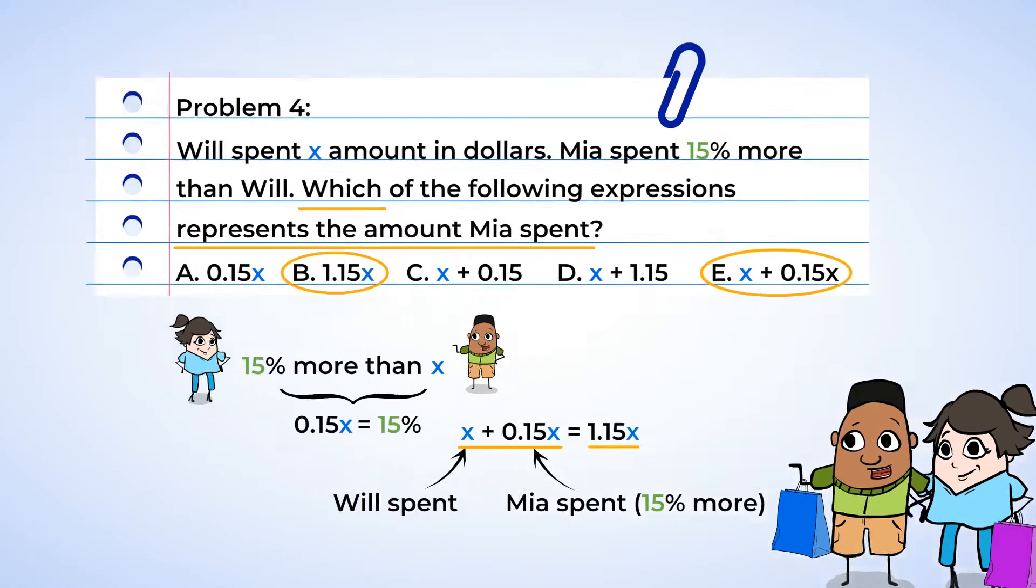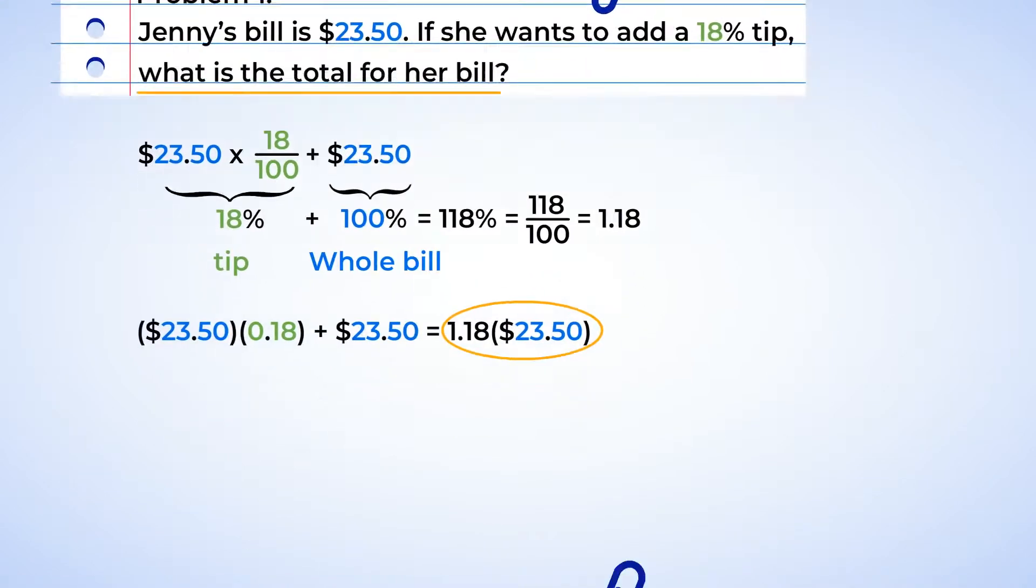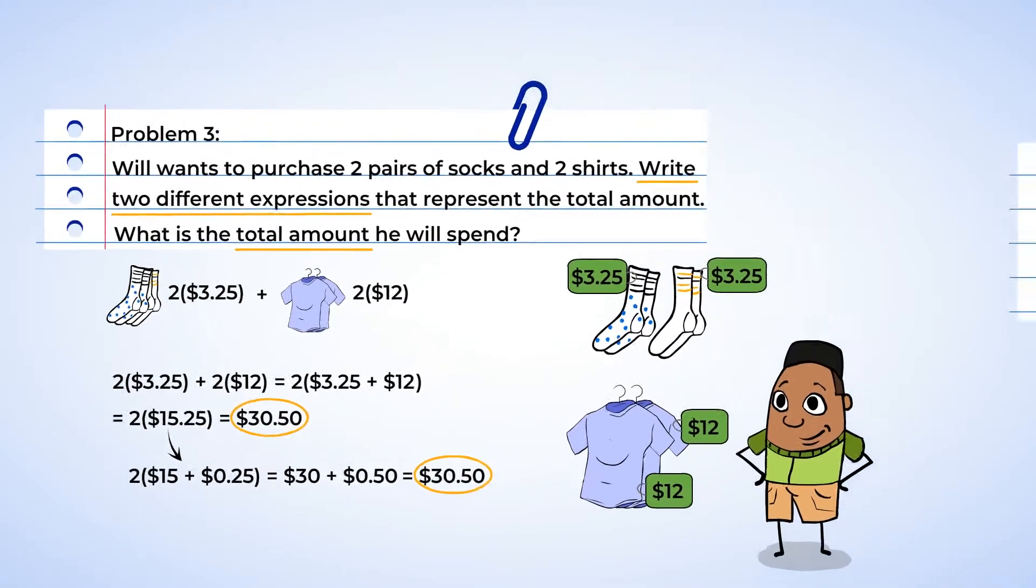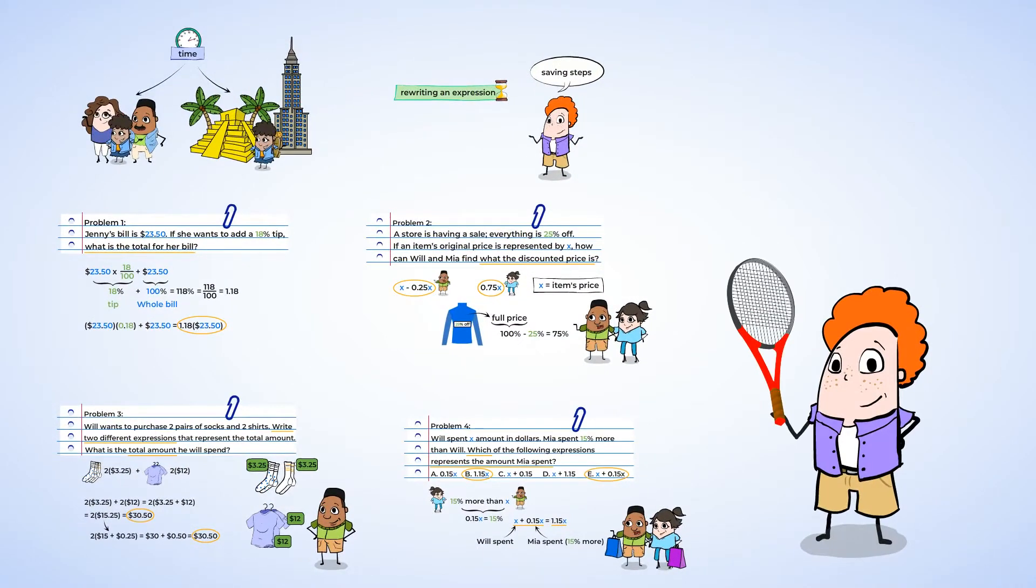Great work today. We were able to find equivalent expressions to help save time when solving problems. Sometimes there are multiple ways to solve a problem. When there are less steps needed to solve a problem, it'll take less time and we are less likely to make mistakes. With all that time we saved, we get some more time for sports now. And so I'm going to go out and train and I'll see you in the next lesson.